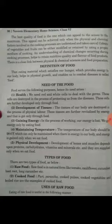How many types of food are there? There are two types: raw food and cooked food. Raw foods include tomatoes, cauliflower, cucumber, beetroot, and long cucumber. Cooked foods include puri, paratha, cooked pulses, cooked vegetables, and boiled rice.